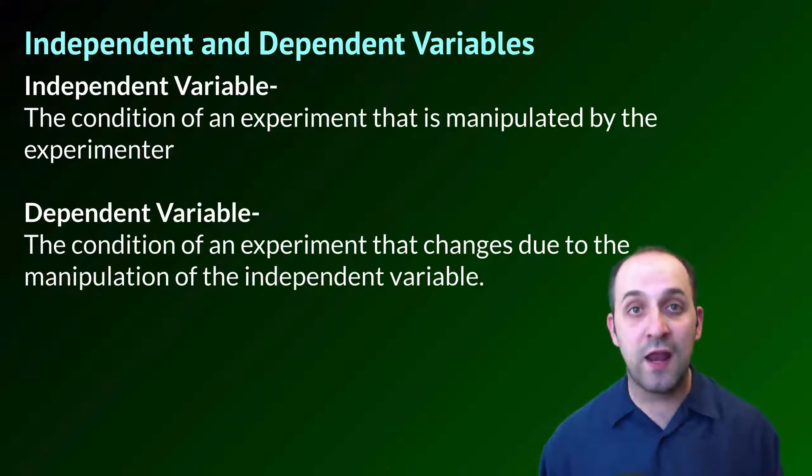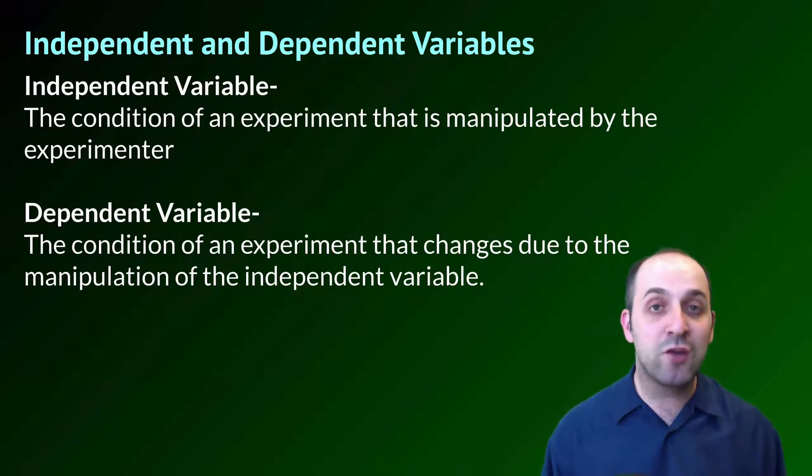The first thing that we should really get a handle on is this notion of independent variables and dependent variables. Here's the way that works. The independent variable is the thing that is manipulated directly by the experimenter. Sometimes it could be the thing that the experimenter just allows to be changed. Time is often an independent variable. The dependent variable is the condition of our experiment that changes due to the manipulation of the independent variable.